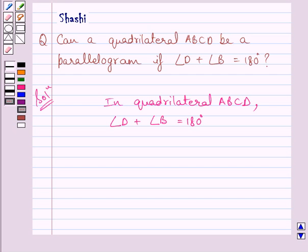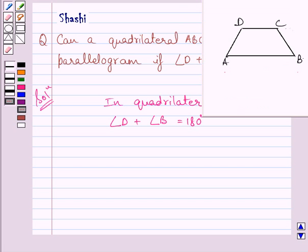Let us now start with the solution. First of all, let us draw a rough figure of quadrilateral ABCD such that the sum of angle D and angle B is equal to 180 degrees.